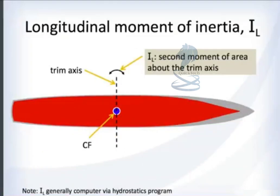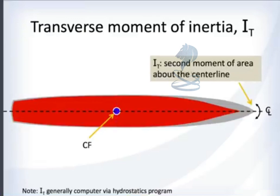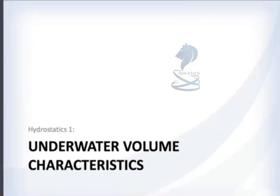The water plane has two moments of inertia. The longitudinal moment of inertia is the moment of area about the trim axis. The transverse moment of inertia is the second moment of area about the center line. Both are almost always calculated by a hydrostatics program — you just need to know what they are and where to use them, and be careful not to mix them up, as they are very different numbers.